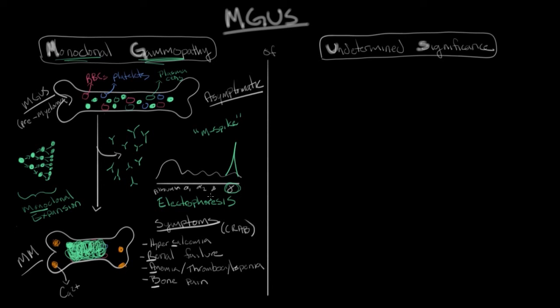Because multiple myeloma is this uncontrolled replication of plasma cell precursors, once it comes to the stage where you have symptoms, it actually becomes a malignancy or a cancer. So if MGUS is a premyeloma and it can produce myeloma, which is a cancer, why is it of undetermined significance? For many people, you would think if it's a precursor to cancer, that would be of extreme significance.